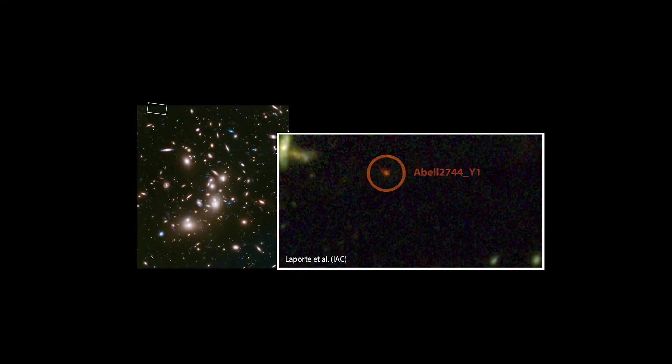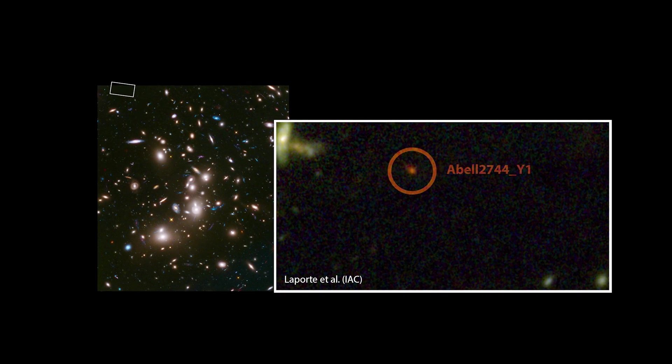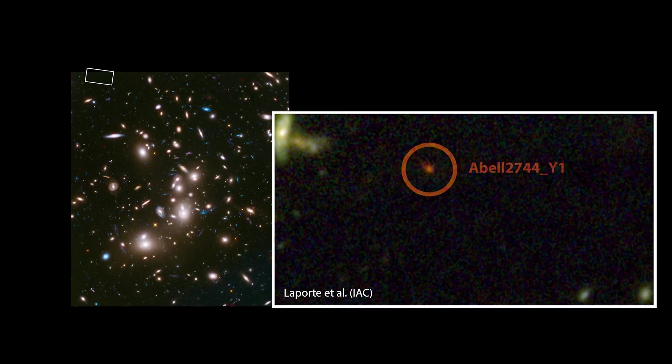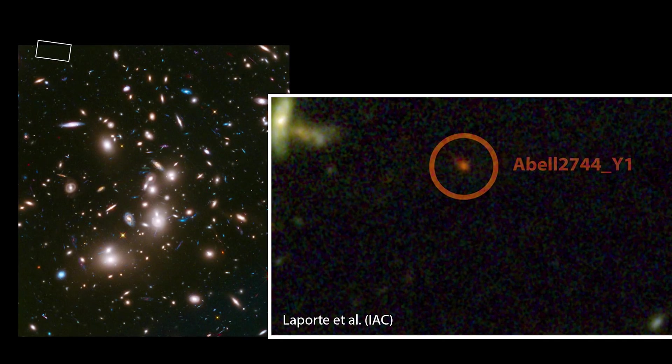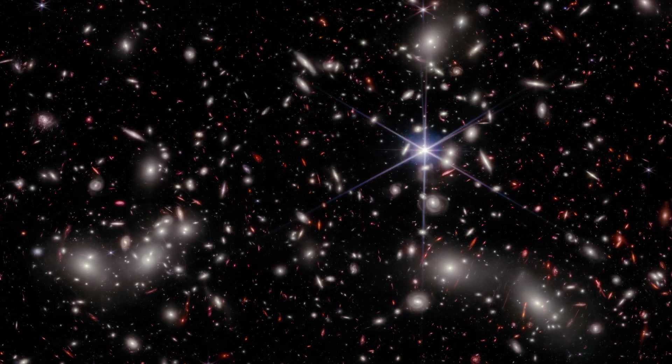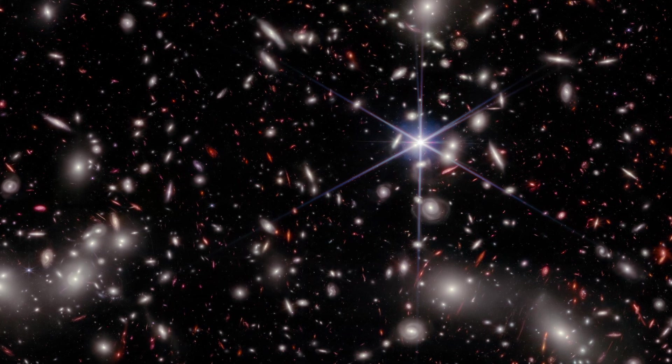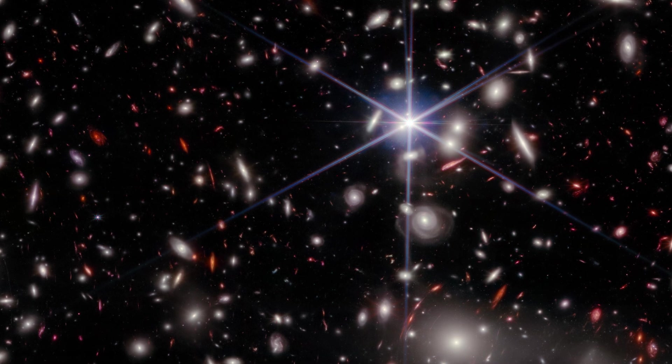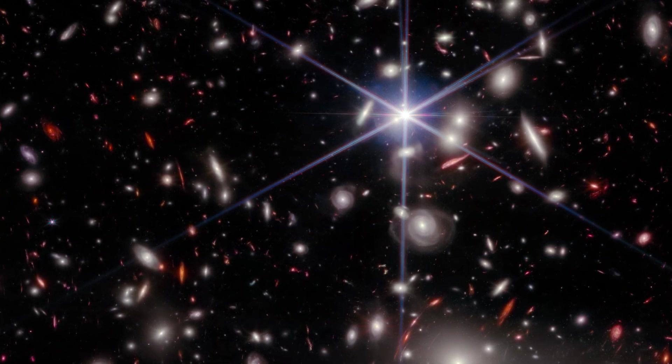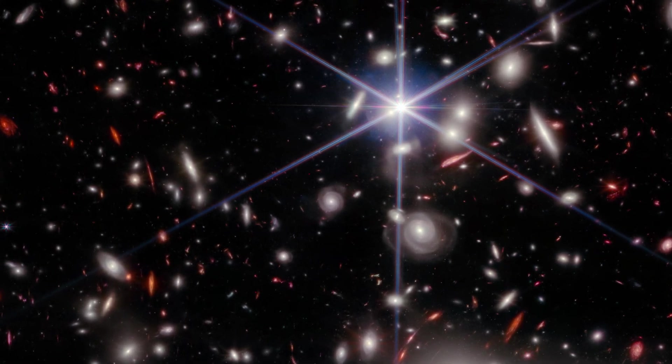Now picture this. Abel 2744 Y1 is like a distant superstar that's not just breaking records, but rewriting the cosmic playbook. With a redshift of eight, its light has journeyed through the universe, with each wavelength stretched due to the ongoing expansion. It's like the universe itself is giving it a standing ovation for its cosmic journey.